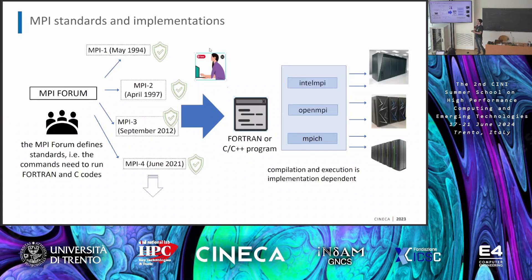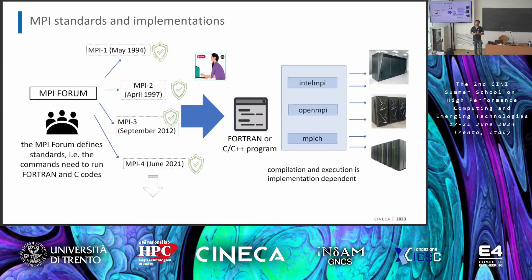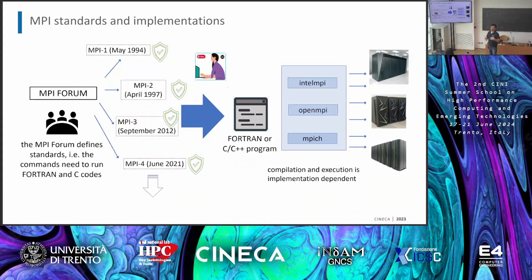MPI was born in 1994. At the beginning there were many implementations. We are going through MPI 5 now. Here we will cover only the very basics — only stuff from MPI 1, the very first standard. There are a lot of improvements in subsequent versions. If you get the basic idea here, you may be stimulated to search for yourself what new things the latest standard introduces.